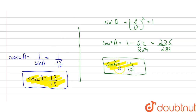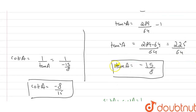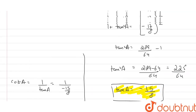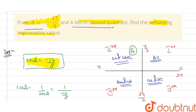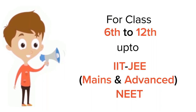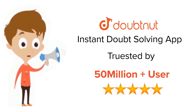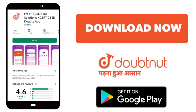So summarizing all values: sin A equals 15 by 17, cos A equals minus 8 by 17, tan A equals minus 15 by 8, cot A equals minus 8 by 15, cosec A equals 17 by 15, and sec A equals minus 17 by 8 as given. For class 6 to 12, IIT JEE and NEET level, trusted by more than 5 crore students — download Doubtnut app today.